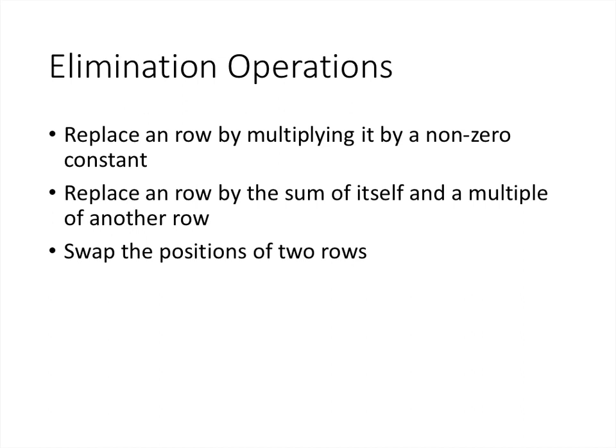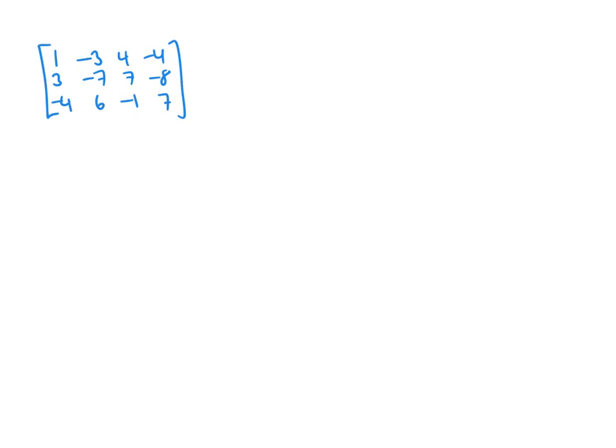Thinking in terms of matrices, our elimination operations become row operations on the horizontal rows. We can replace a row by multiplying it by a non-zero constant — that simulates multiplying both sides of the equation by a non-zero constant. We can replace a row by the sum of itself and a multiple of another row — simulating replacing an equation by such a sum. And we can swap the positions of two rows, which simulates swapping two equations.